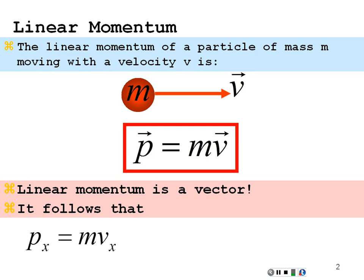Momentum is a vector, so there are three components: X, Y, and Z. The momentum in the X direction is the mass times the velocity in the X direction.